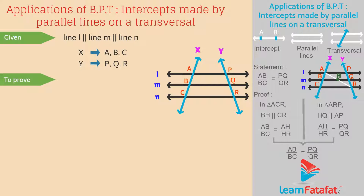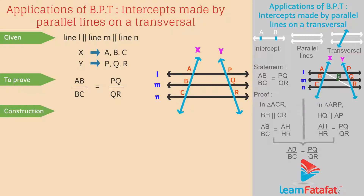To prove: We have to prove the relation AB divided by BC is equal to PQ divided by QR. Construction: In order to prove the stated relation, we will draw segment AR intersecting the line M at point H.